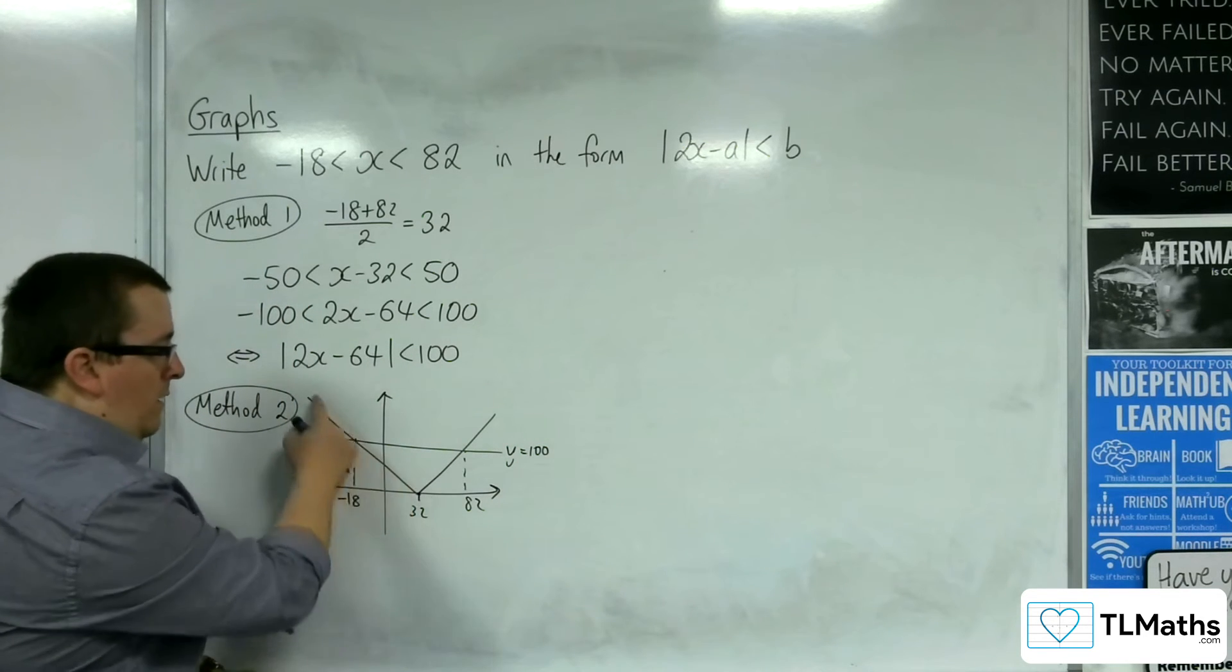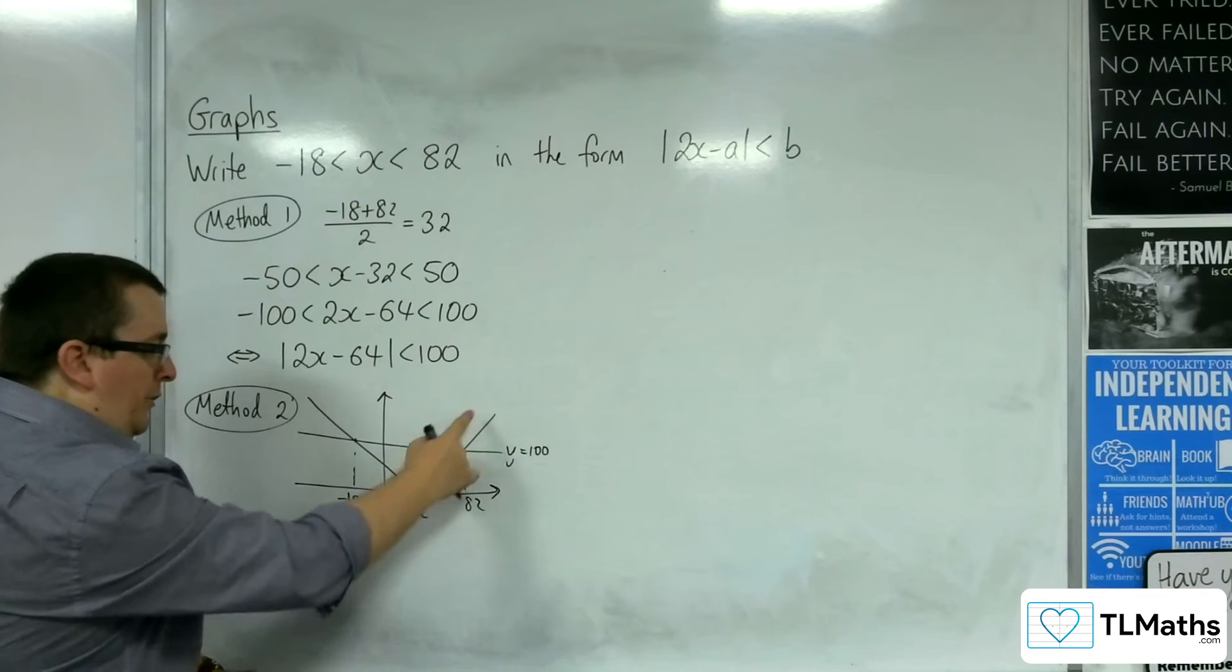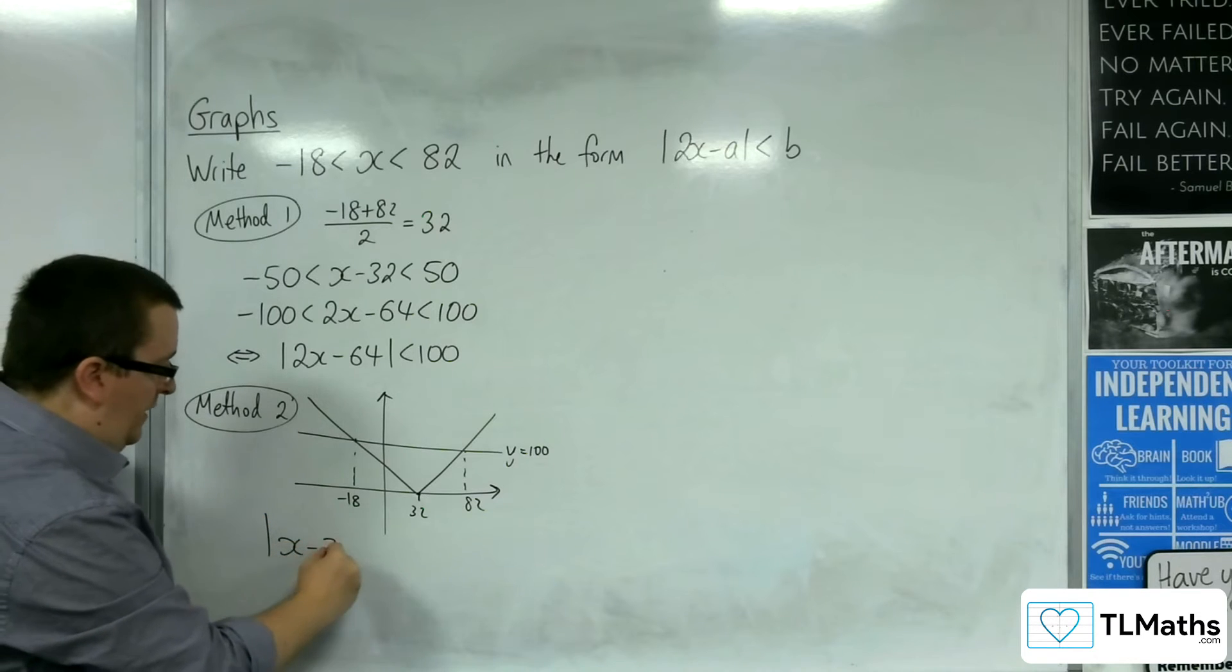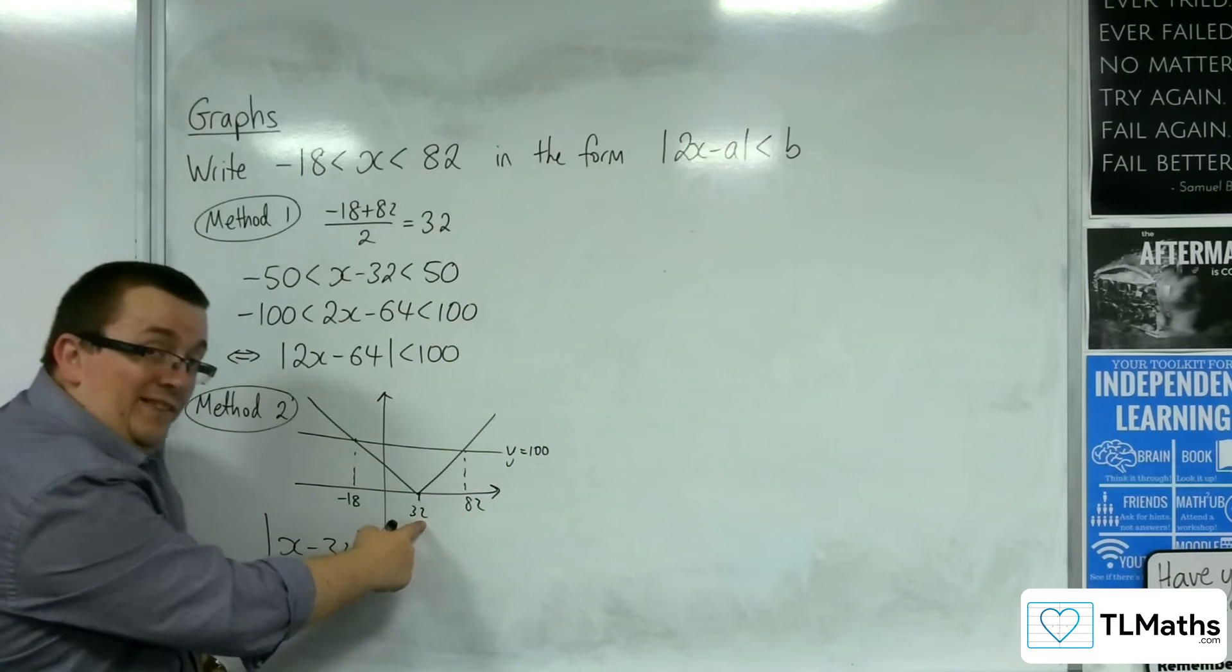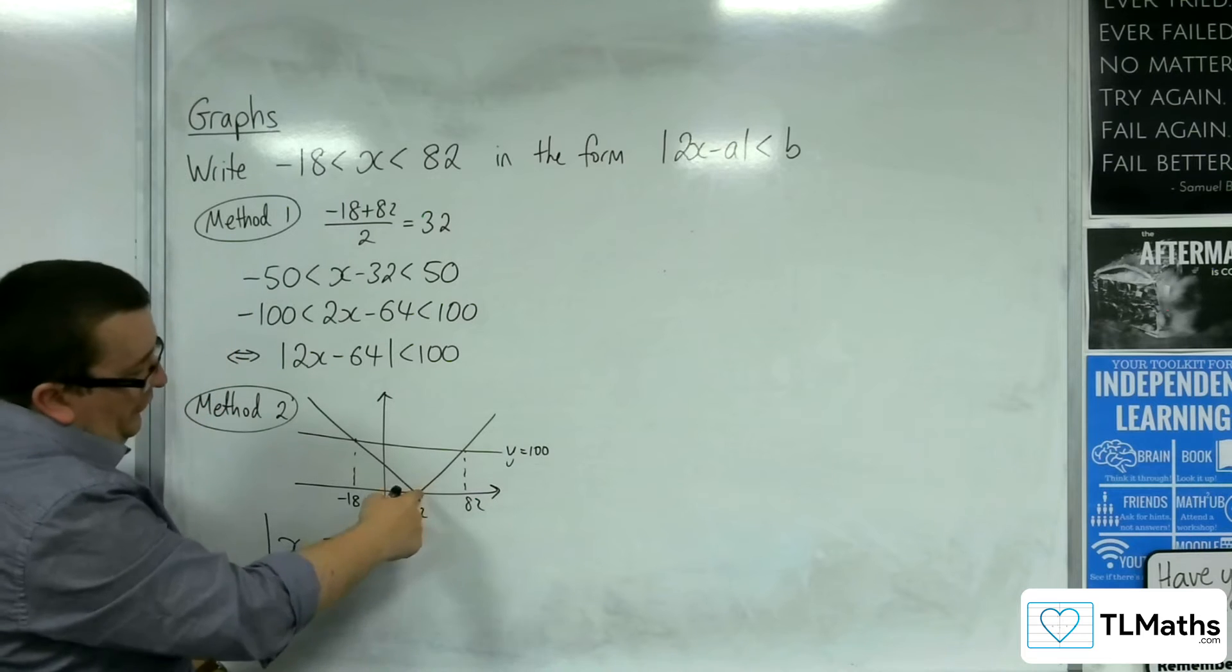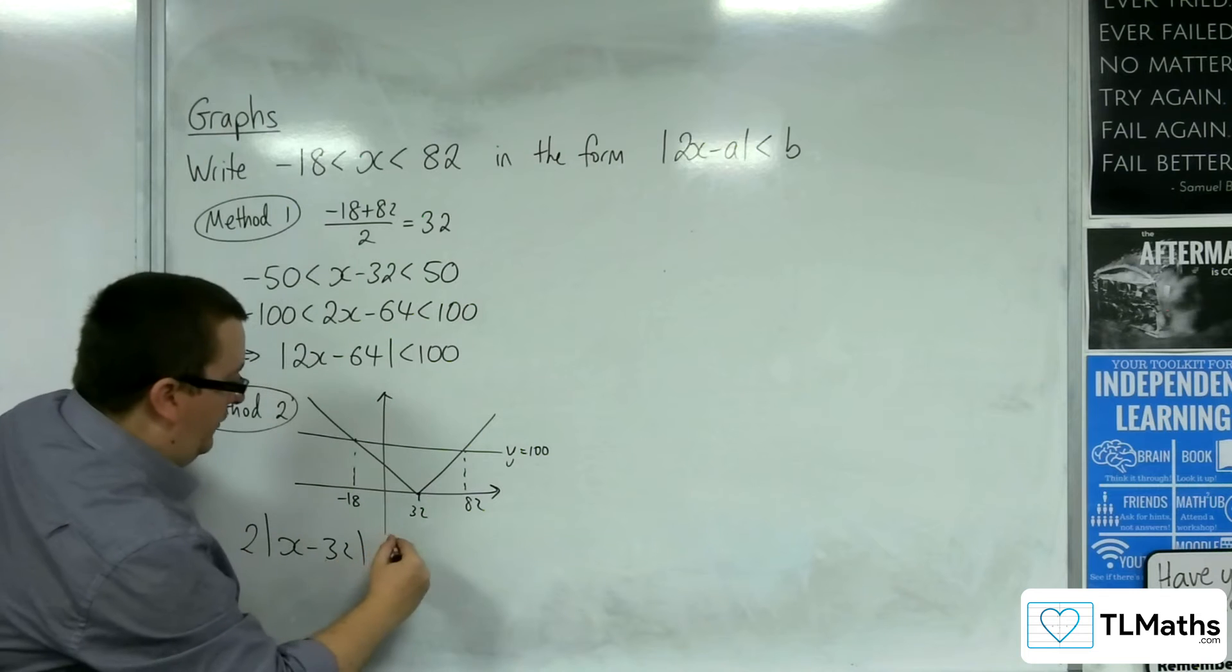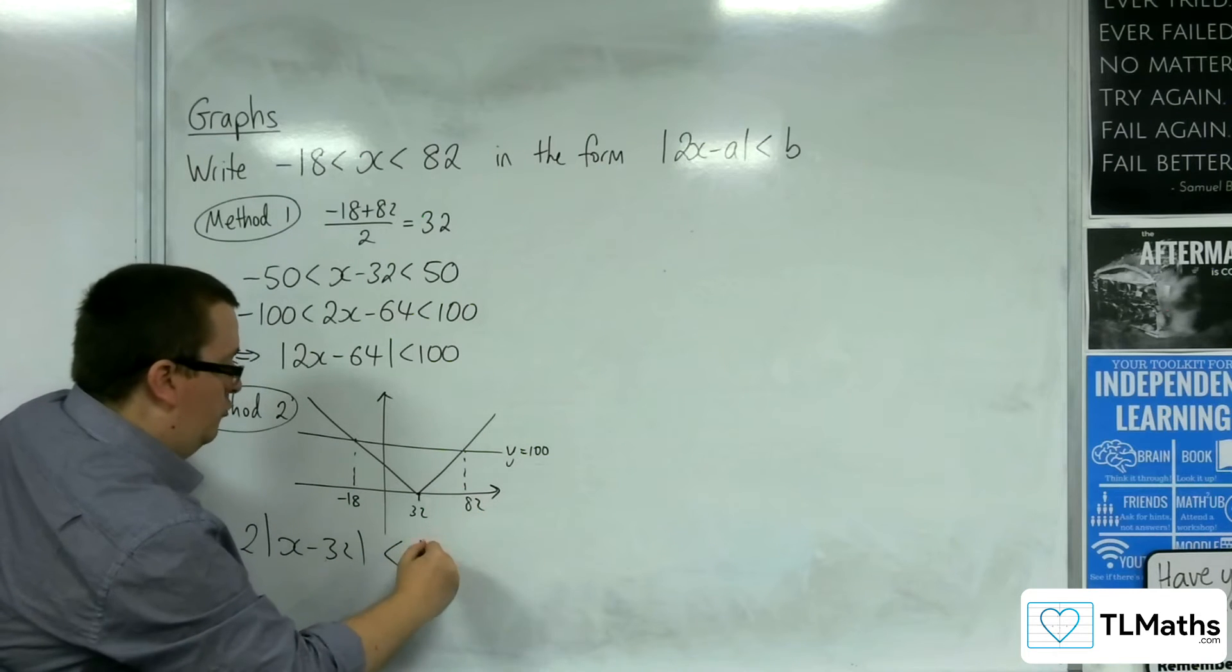So the graph, the modulus graph here, would have a form of |x - 32|. Because that's where the vertex is. Because the gradient is 2, I've got to put a 2 in front. And then I've got to say, well, that's less than 100.